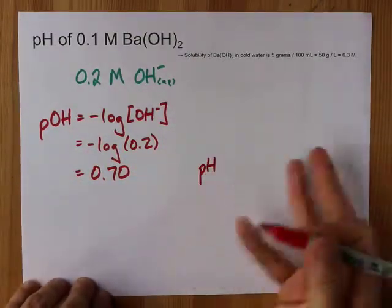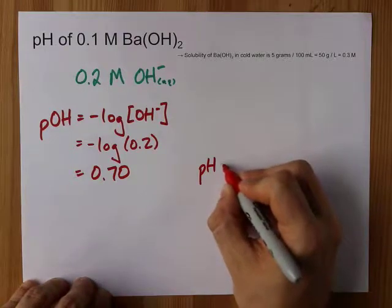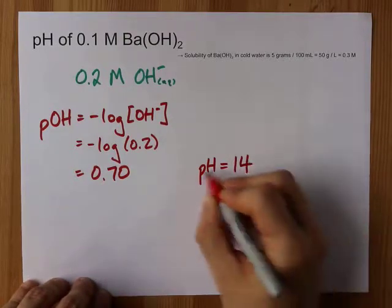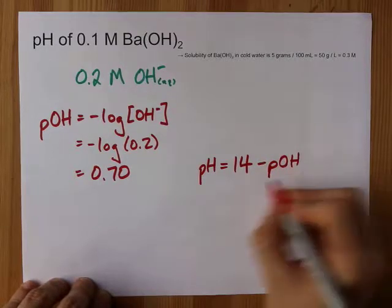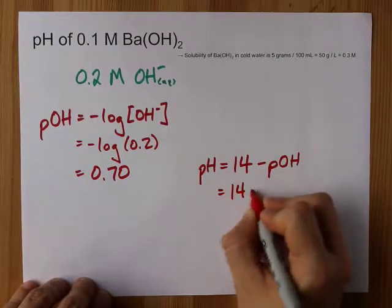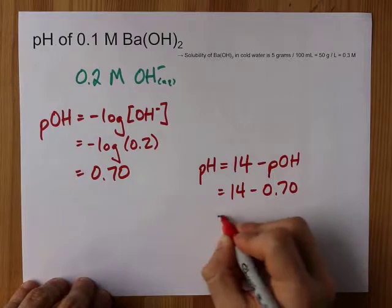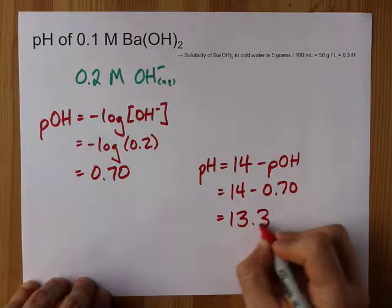At 25 or room temperature, the two of them have to add up to 14, so you get the pH from 14 minus the pOH, that's 14 minus 0.7, which gives me 13.3.